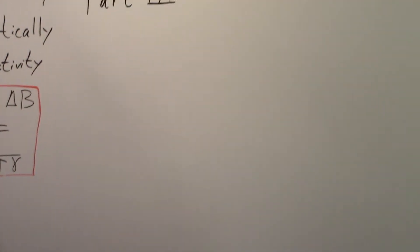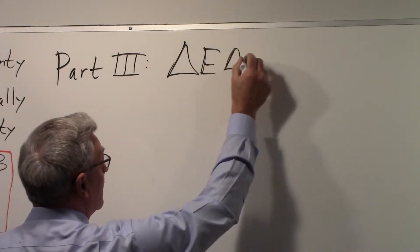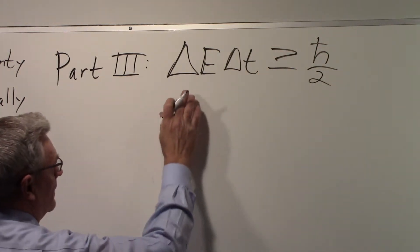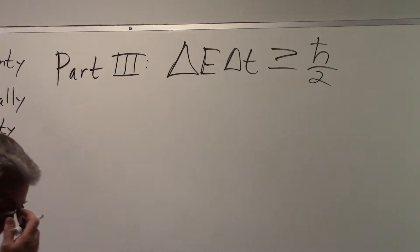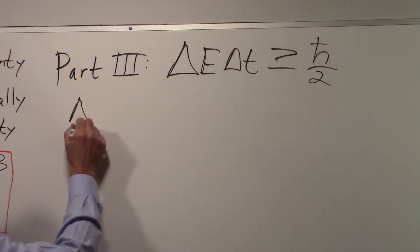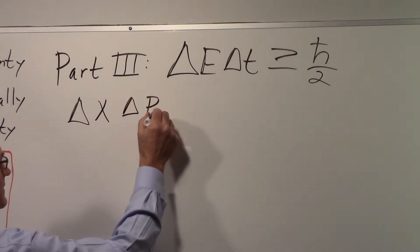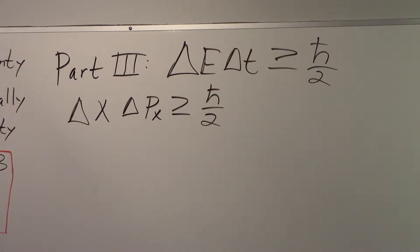For part three we want to take a look at the energy-time uncertainty principle: ΔE · Δt ≥ ℏ/2, where ℏ = h/2π. Everyone is more or less familiar with the position-momentum uncertainty principle: Δx · Δpx ≥ ℏ/2. We can look at some issues here.